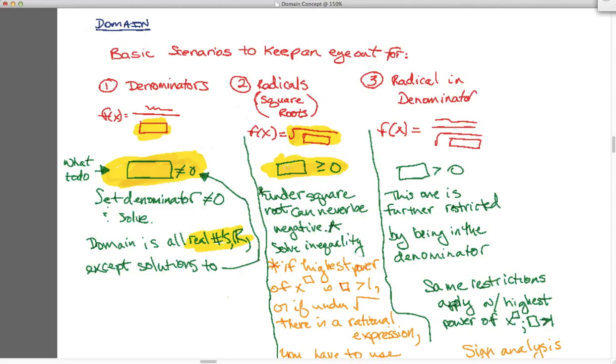Whatever's under the denominator is greater than or equal to zero, then you solve the inequality. Now keep your eyes open because oftentimes what they'll do is they'll try to trick you because if the power of the highest